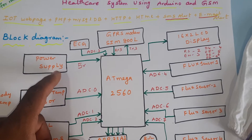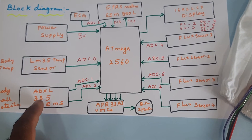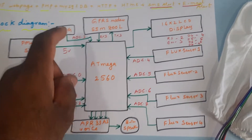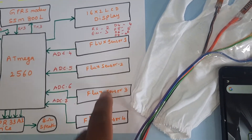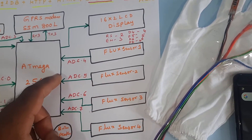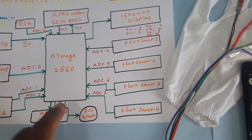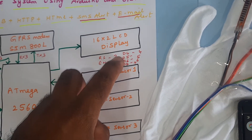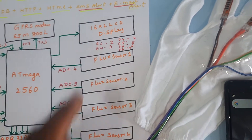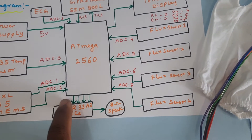The 5V power supply, LM35 temperature sensor on ADC0, ADXL335 on ADC1 and ADC2, ECG sensor on ADC3, and flex sensors one through four on ADC4 through ADC7 handle analog-to-digital conversions. The 16x2 LCD display uses pins RS, Enable, D4, D5, D6, D7 mapped to pins 2 through 7.